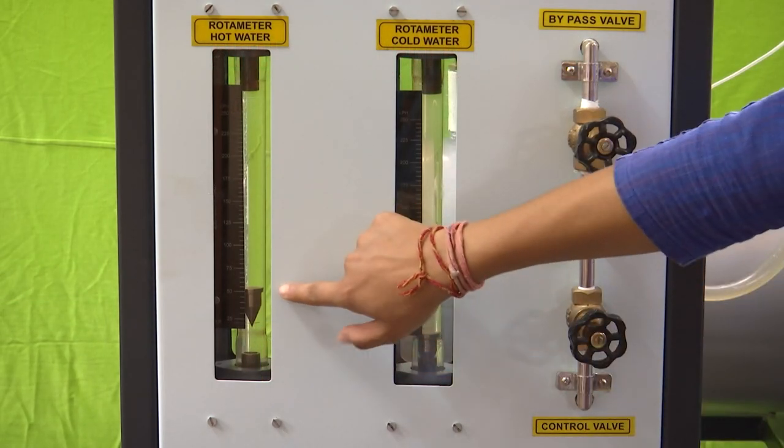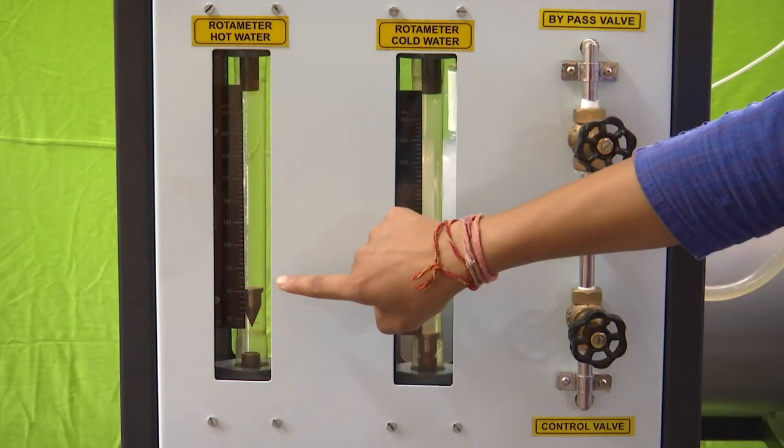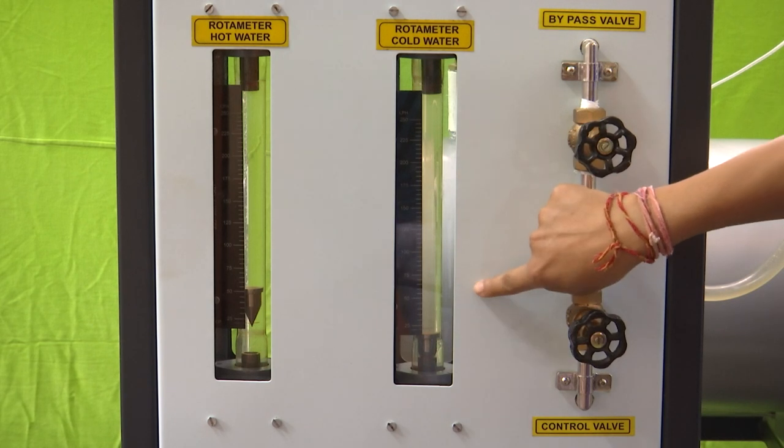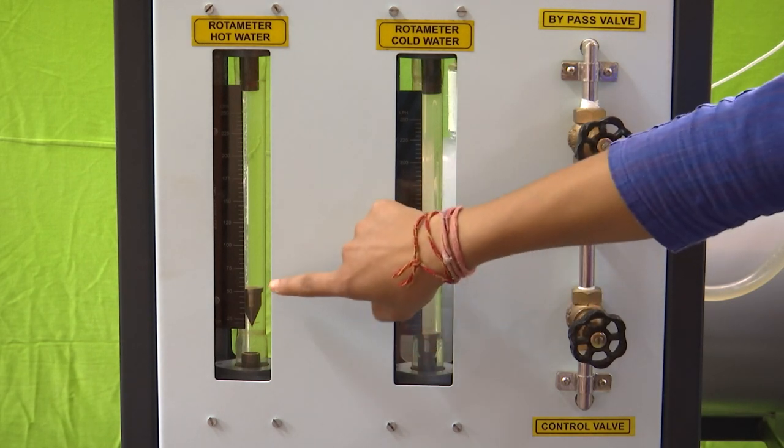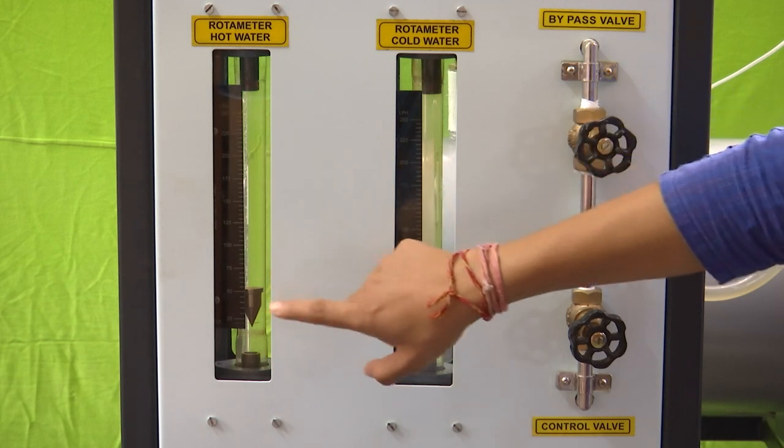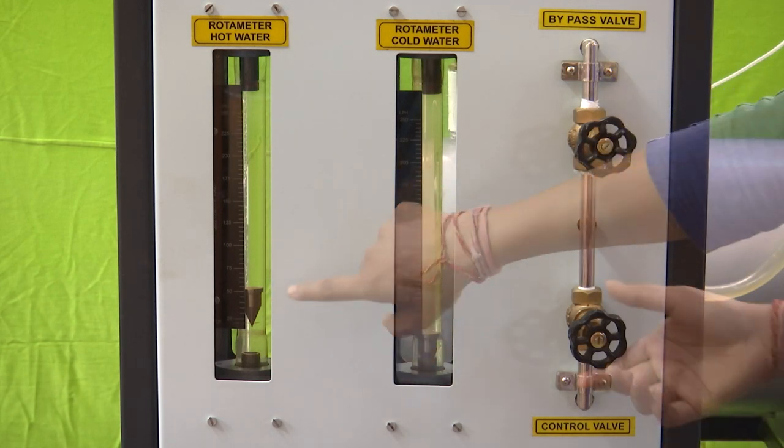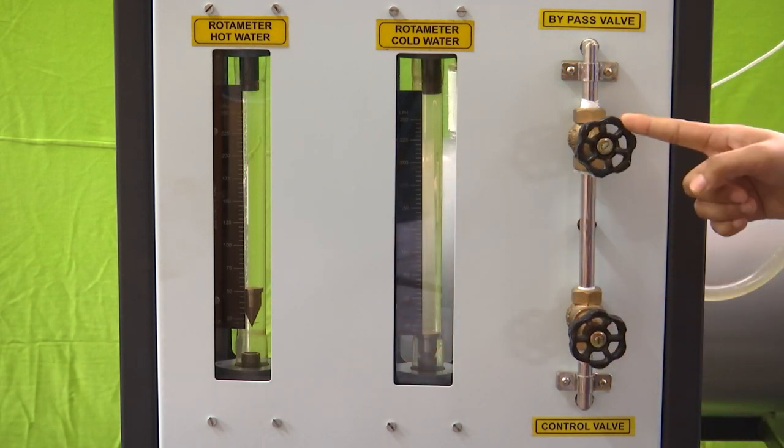These are the rotameters for measuring the fluid flow rates, so that is for hot fluid and for cold fluid. Currently the pump is on and the fluid flow rate is very low. We will adjust it using the control valve here and the bypass valve above.